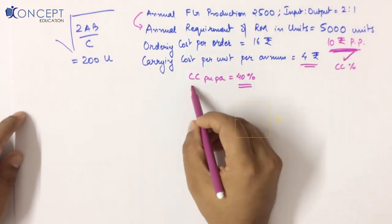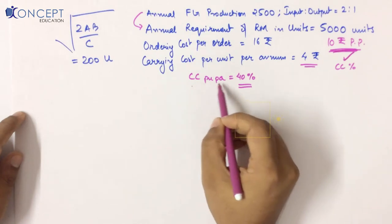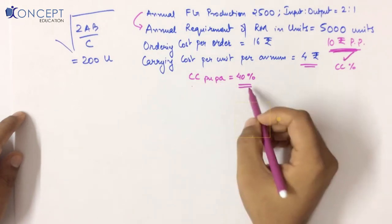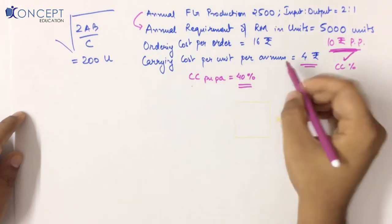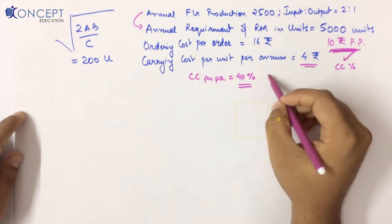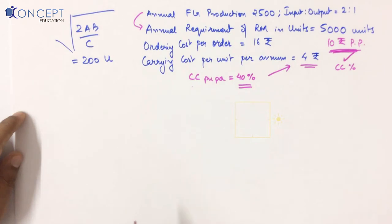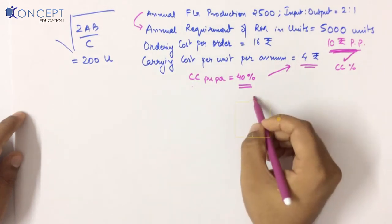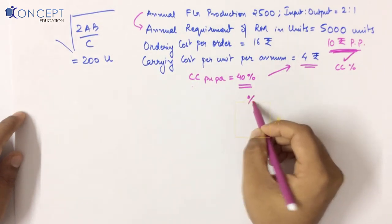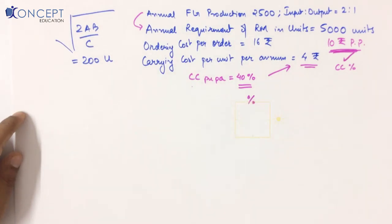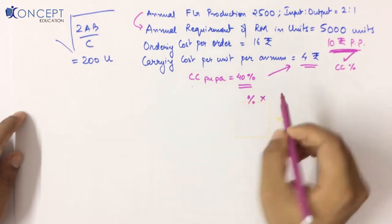When carrying cost per unit per annum is given as a percentage, I need to find it in absolute terms. I find it by multiplying the percentage by the purchase price of raw material to get the carrying cost per unit per annum in absolute terms.